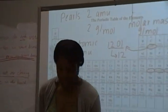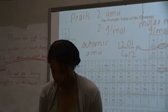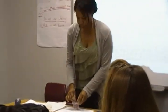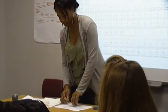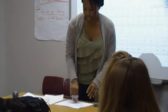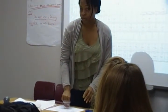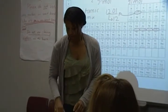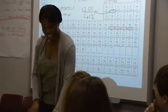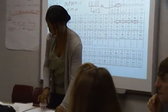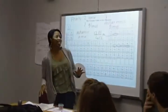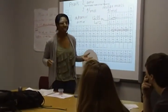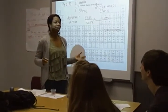So knowing that pearls is 2 grams per mole for the molar mass, and imagine that each pearl actually weighs 1 gram, how many pearls would I need to actually make 1 mole? And how many pearls would I need to actually make 2 moles?